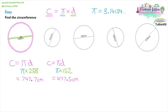Question three: write down the formula — circumference equals pi times diameter. We don't substitute a number for pi because we use the pi button on the calculator for maximum accuracy. The diameter is 196, giving us 615.8 centimetres to one decimal place. The digit after the 7 is 5, so we round up.